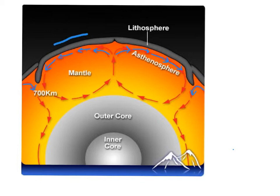So in this case, this plate is moving this way, and this plate is moving this way. Once the material cools down towards the crust, it then sinks. That's the reason it's called a current.